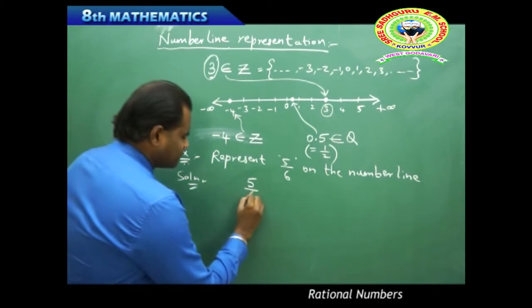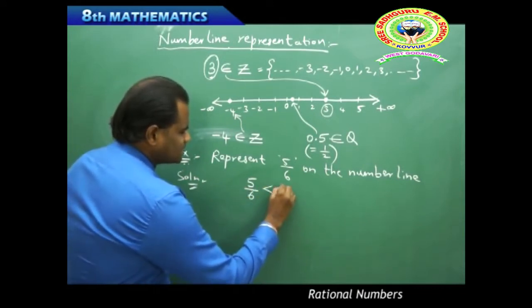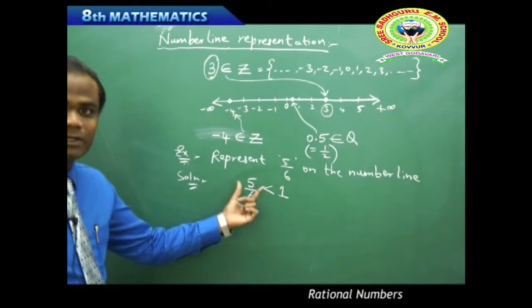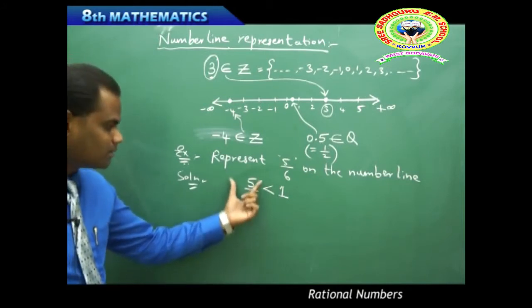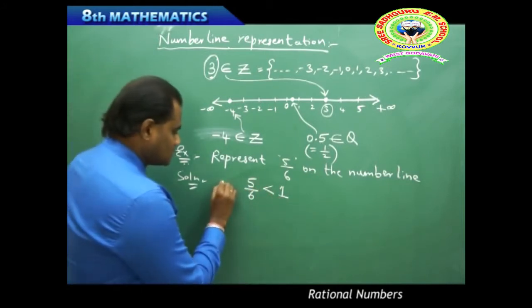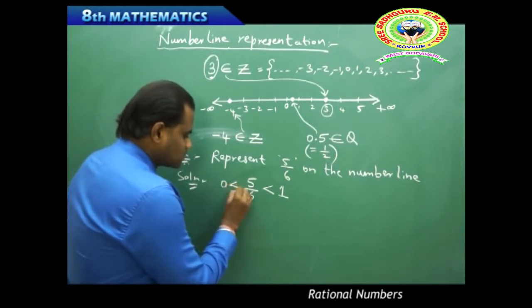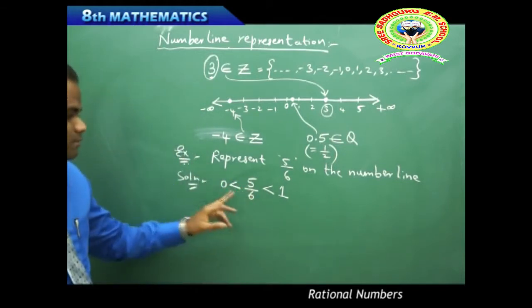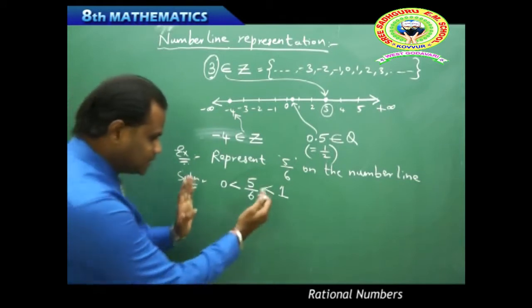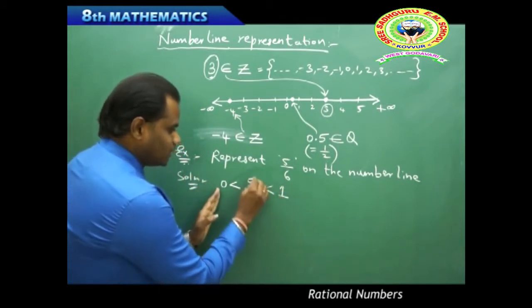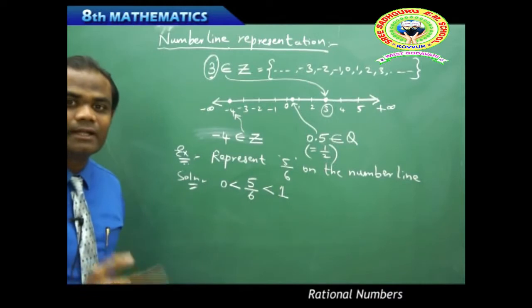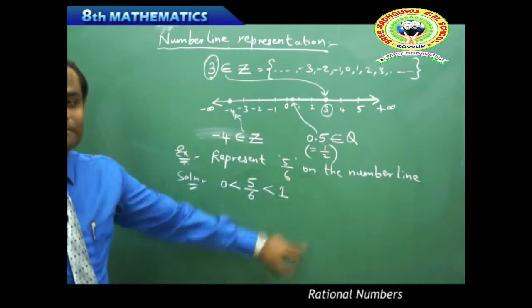We identify that 5/6 is a value less than 1 because the numerator is less than the denominator, so 5/6 is always between 0 and 1. Therefore, I divide the interval between 0 and 1 in favor of 5/6, which makes it easy to represent on the number line.